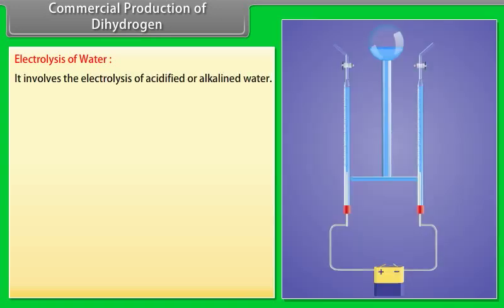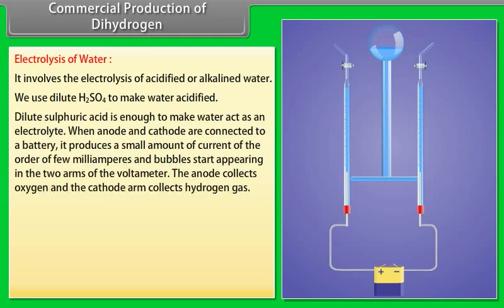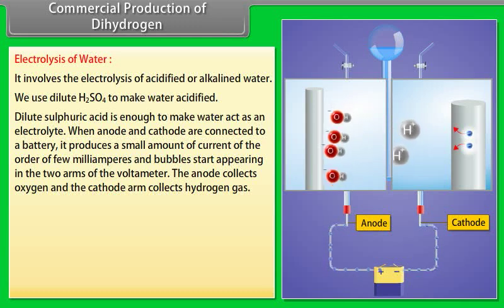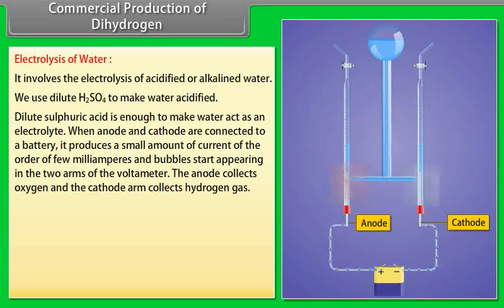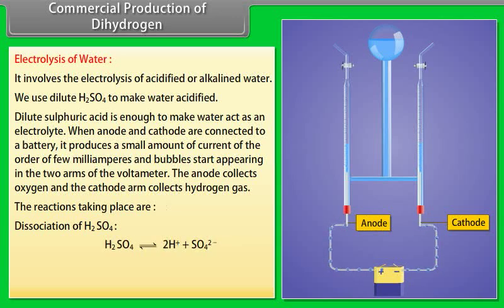Commercial production of dihydrogen. Electrolysis of water: It involves the electrolysis of acidified or alkalined water. We use dilute H2SO4 to make water acidified. Dilute sulphuric acid is enough to make water act as an electrolyte. When anode and cathode are connected to a battery, it produces a small amount of current of the order of few milliamperes and bubbles start appearing in the two arms of the voltmeter. The anode collects oxygen and the cathode arm collects hydrogen gas.